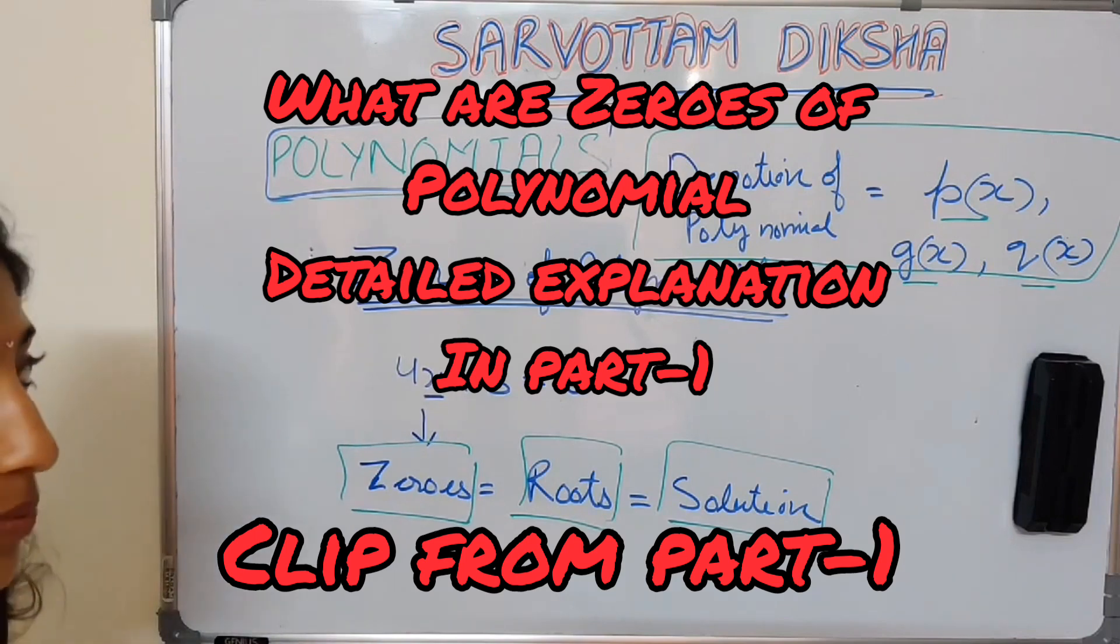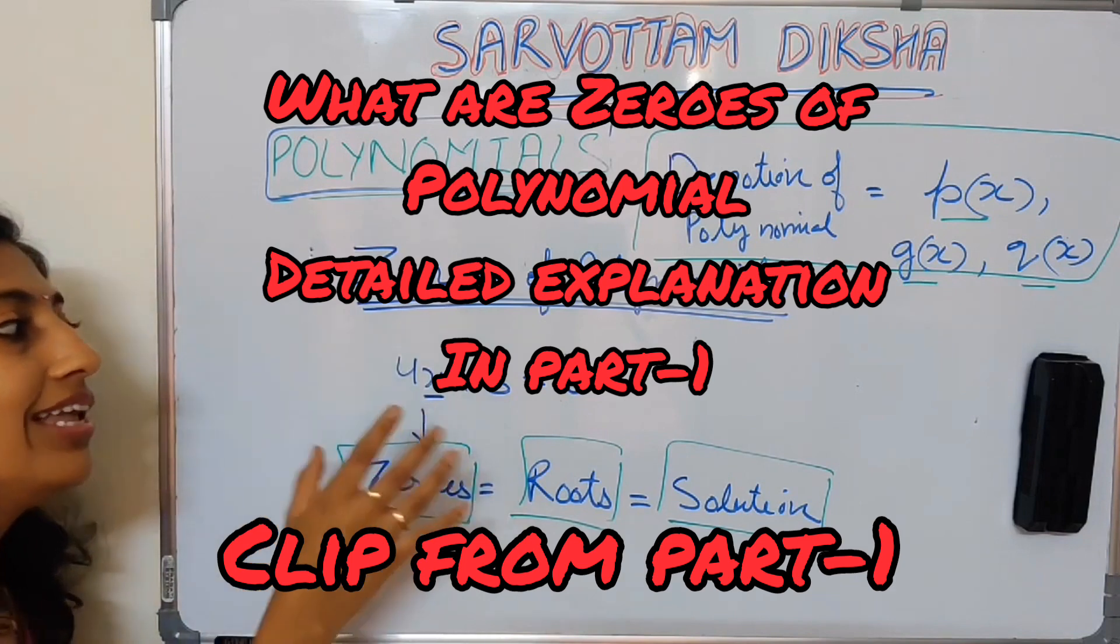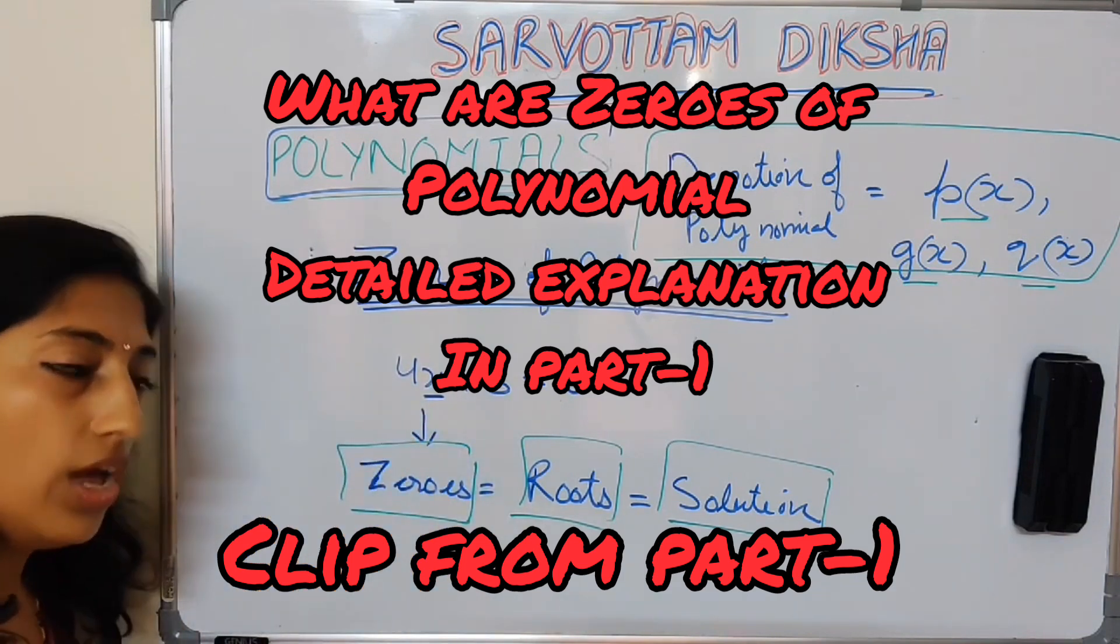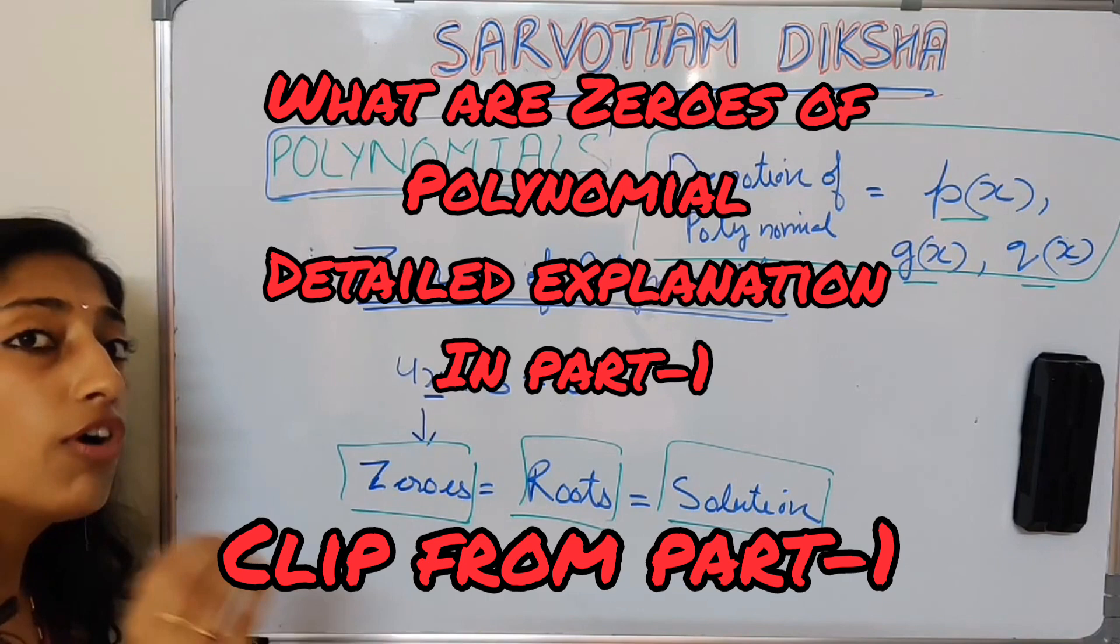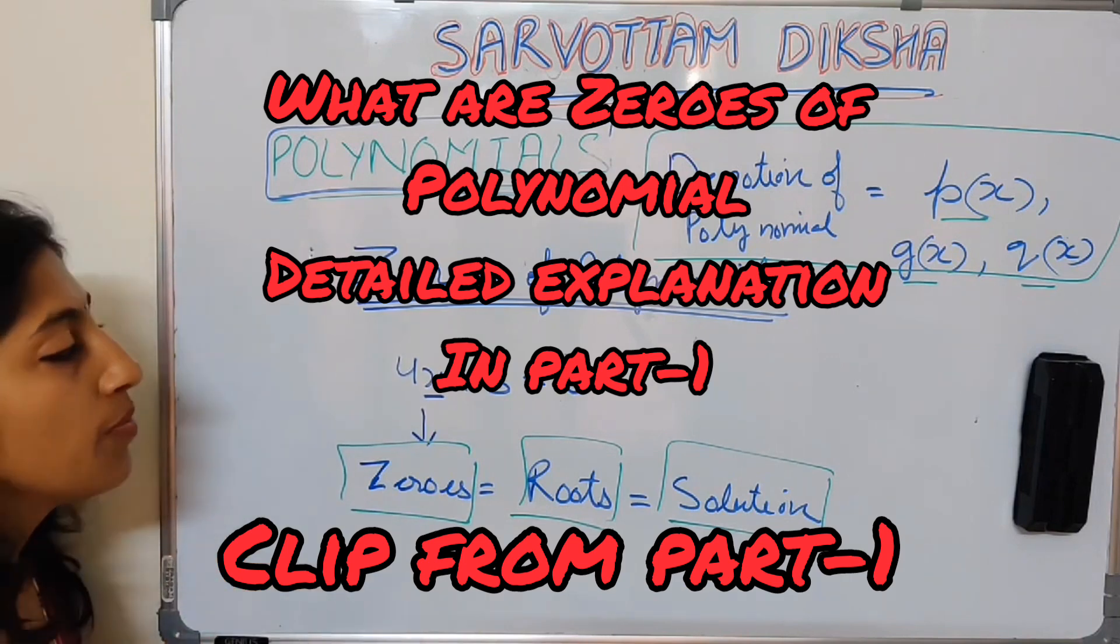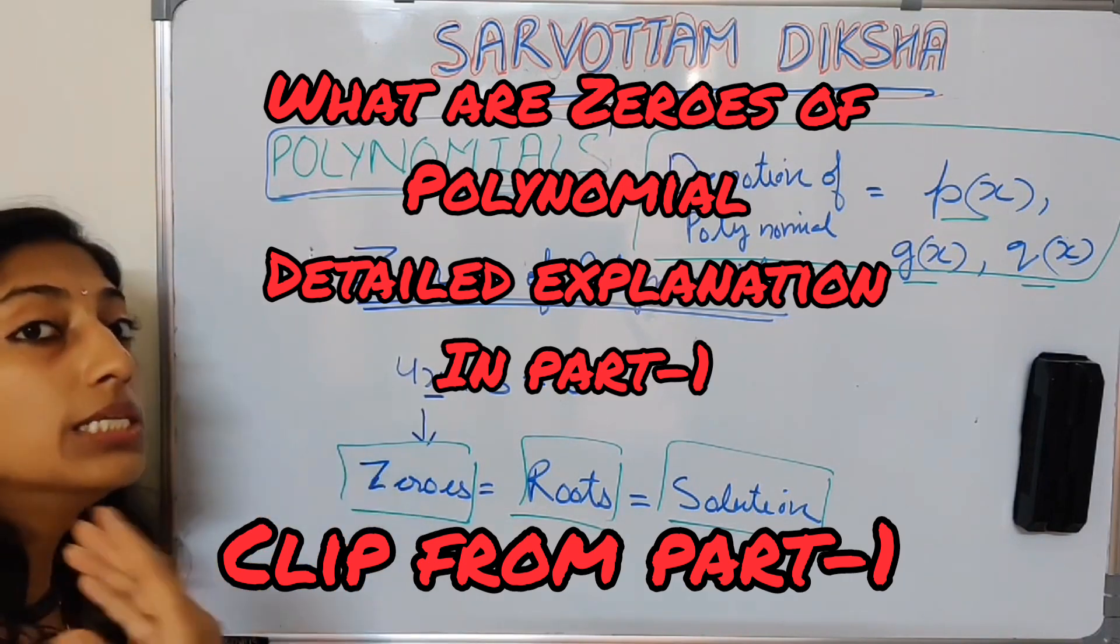How to find zeros? What we do? As you have seen here, I will equate my entire expression to 0 and I will then find for which particular values of x my expression is becoming 0.